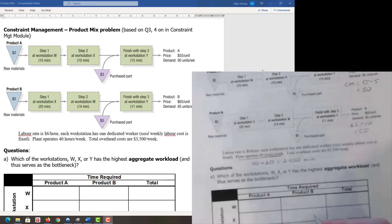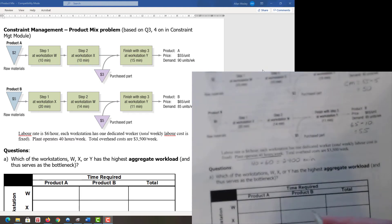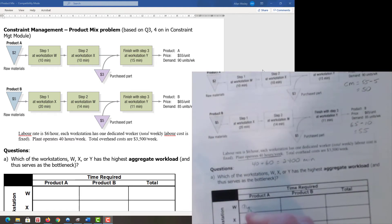Product A sells 90 units. At workstation W, A consumes 10 minutes, so 90 times 10 equals 900 minutes. At workstation X, again 90 units times 10 minutes equals 900 minutes.